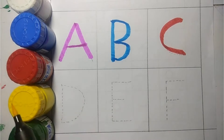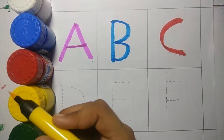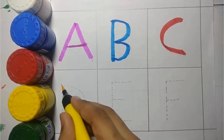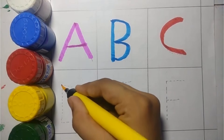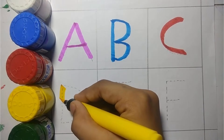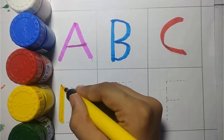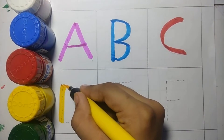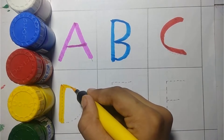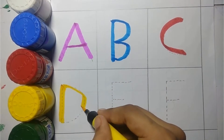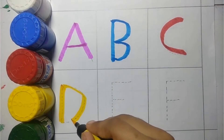Yellow color. D, D for dog, dog means kutta.